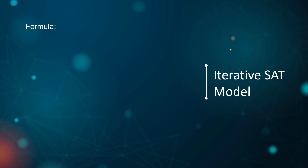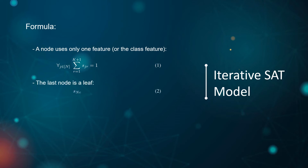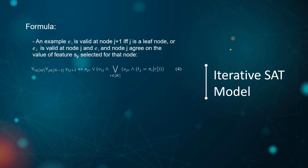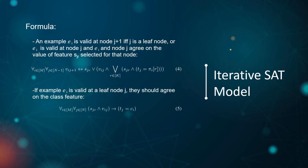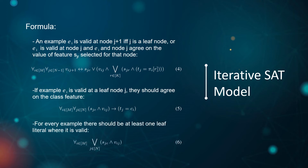The iterative SAT model is constructed by the following constraints: a node uses only one feature or the class feature; the last node is a leaf; all examples are covered at the first node. An example e_i is covered at node j+1 if and only if node j is a leaf node. For the example covered at node j and agreeing on the value of the feature selected for that node. If example e_i is covered at a leaf node j, they should agree on the class feature. For every example, there should be at least one leaf literal where it is covered.